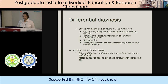Acquired undescended testes are testes in which, due to failure of the spermatic cord to elongate in proportion to body growth, the testes appear to ascend out of the scrotum with increase in age.